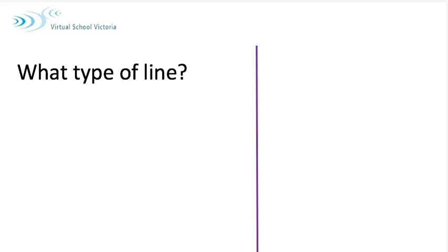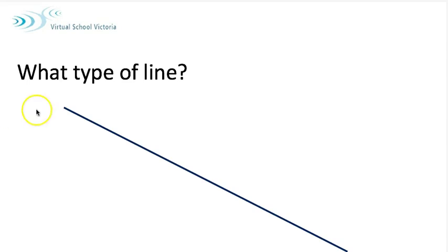This line is a vertical line. Think of a rocket straight up and down. Vertical line. This line, the first word I thought of was slanted, but the mathematical word for it is oblique.